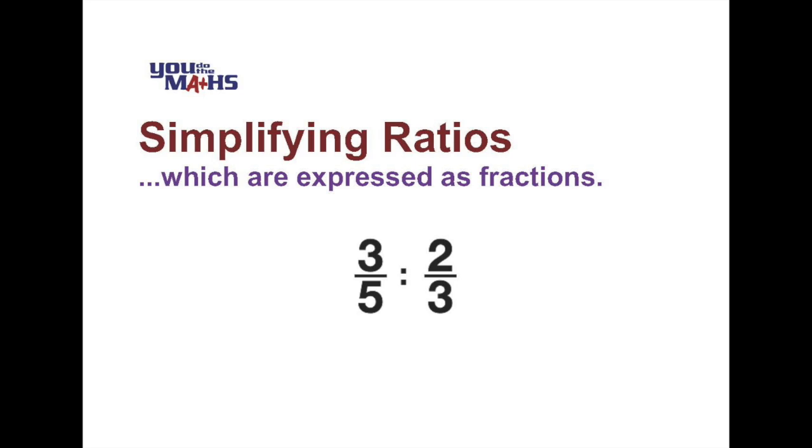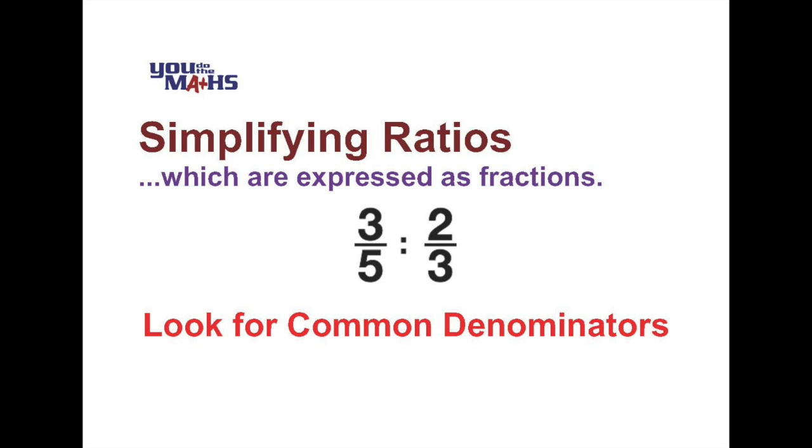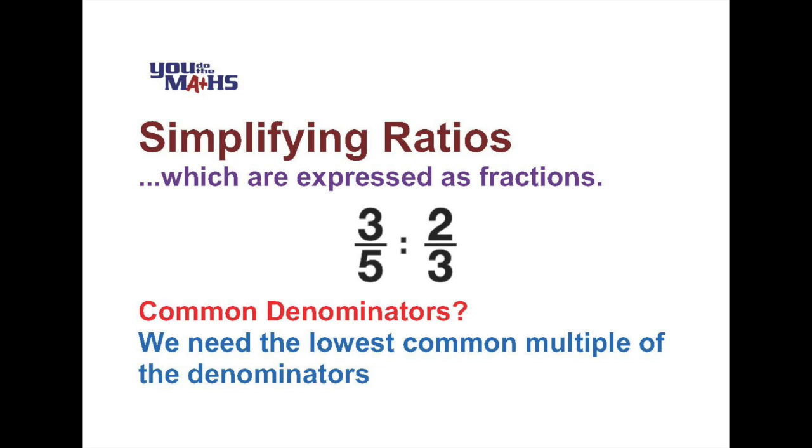So first of all we'll have a look at the basic process and we need to look for common denominators between the two fractions. That process is simplified by looking for the lowest common multiple of the denominators. Now in this case the lowest common multiple of three and five is fifteen, and what we have to do is change the numerator of each fraction the same way that the denominator was changed.